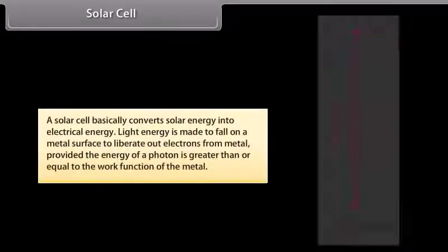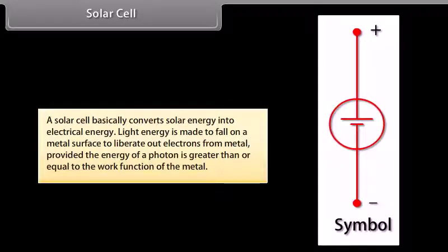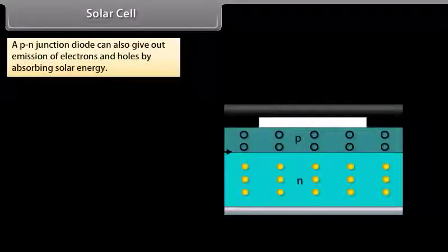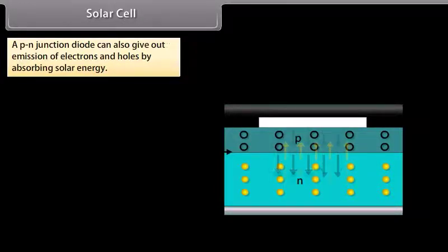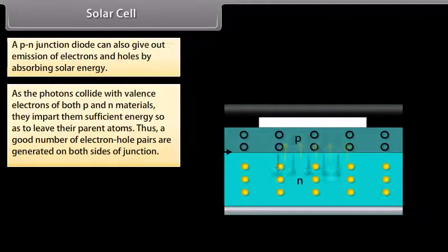Solar cell: A solar cell basically converts solar energy into electrical energy. A P-N junction diode can emit electrons and holes by absorbing solar energy. The P material at the top is very thin compared to the N material. Solar energy photons entering from the top glass window penetrate to both sides of the junction. As photons collide with valence electrons of both P and N materials, they impart sufficient energy for the electrons to leave their parent atoms, generating electron-hole pairs on both sides of the junction.